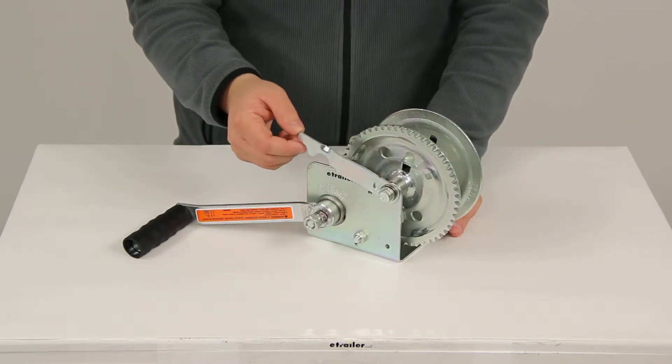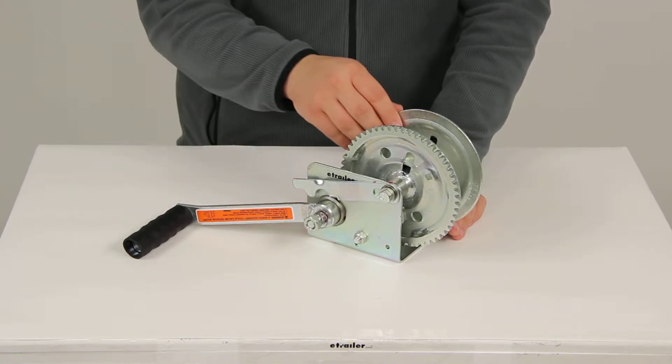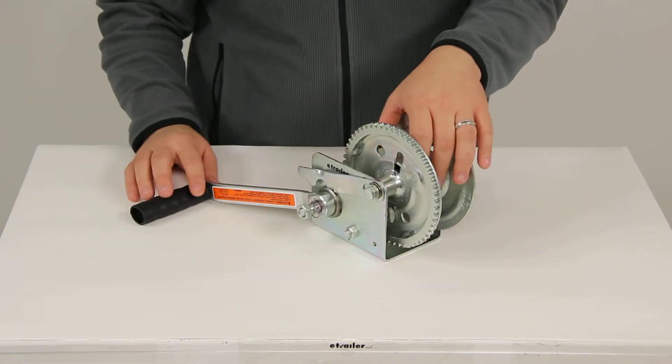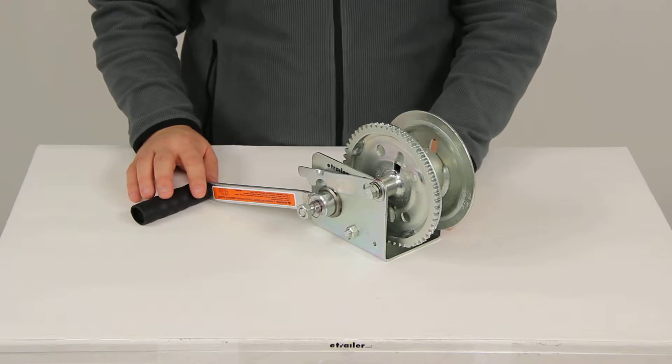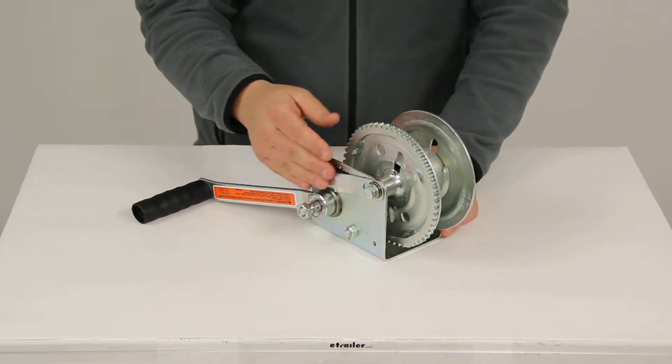This lever right here is the freewheel lever. When it's engaged, the cable that you would have installed on the spindle can be pulled off manually without engaging the brake.